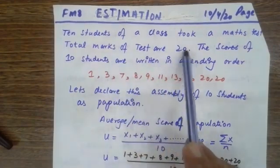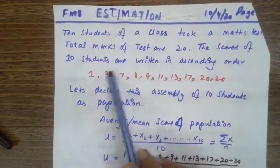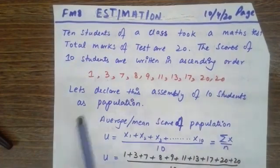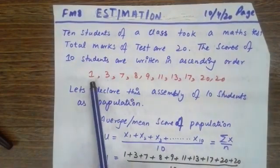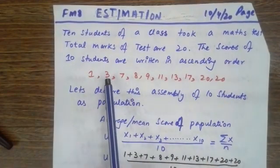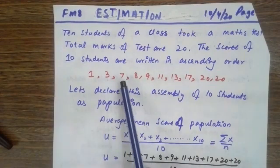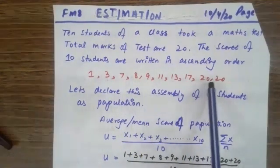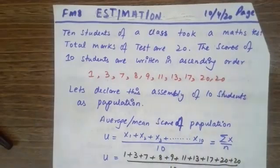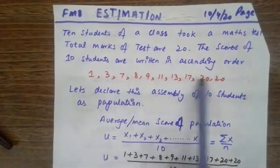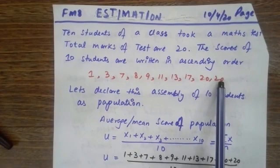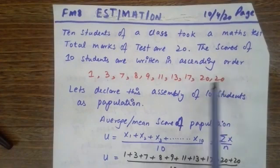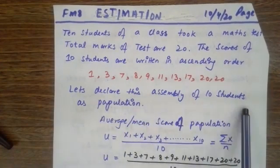The scores of the 10 students are written in ascending order. There were only 10 students. One of them scored 1 and the other scored 3, and then 7, 8, 9, 11, 13, 12, 20, 22. Two students scored full marks. Let's declare this data of 10 students as the population.